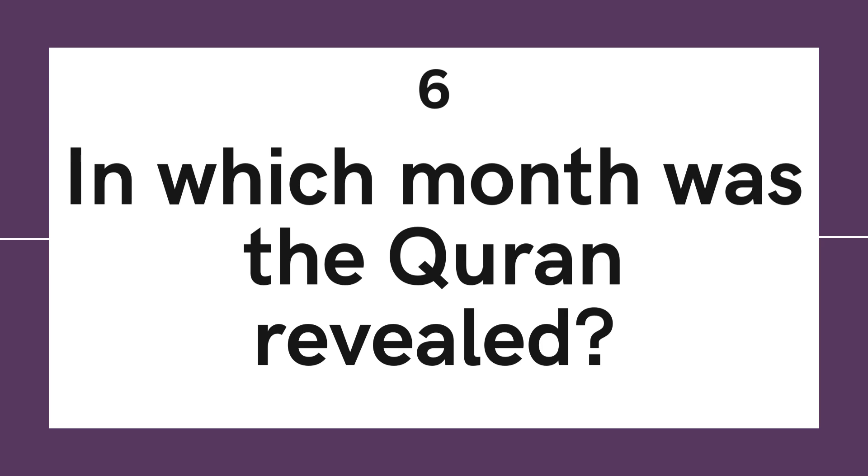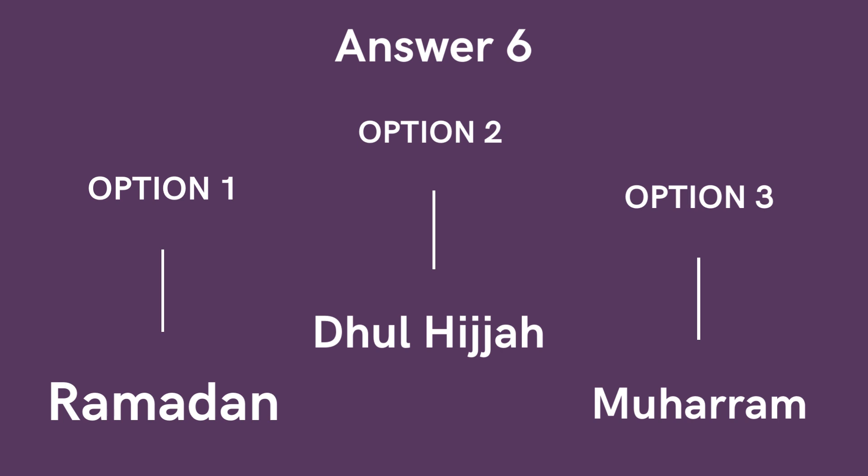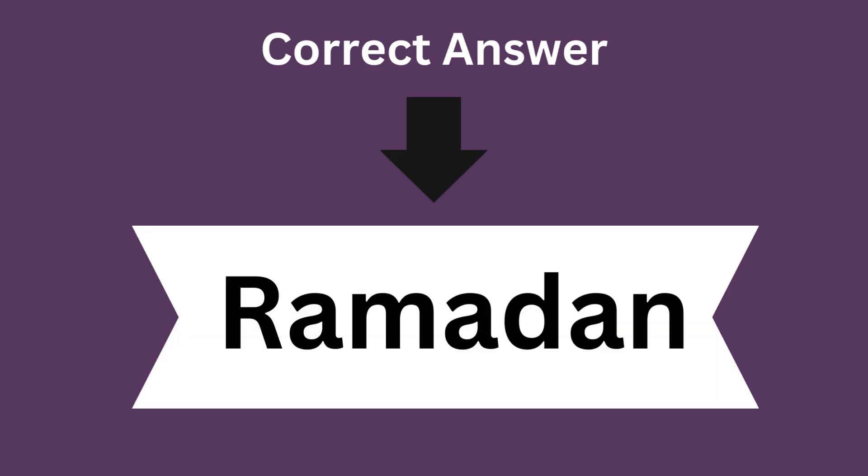Question 6: In which month was the Quran revealed? Option 1: In the month of Ramadan. Option 2: Dhul Hijja. Option 3: Muharram. And the correct answer is Ramadan.